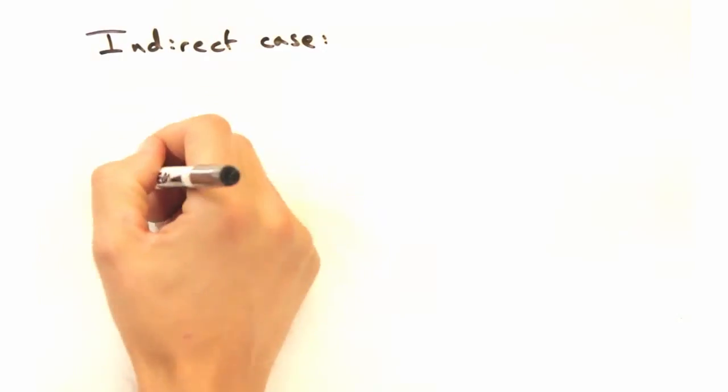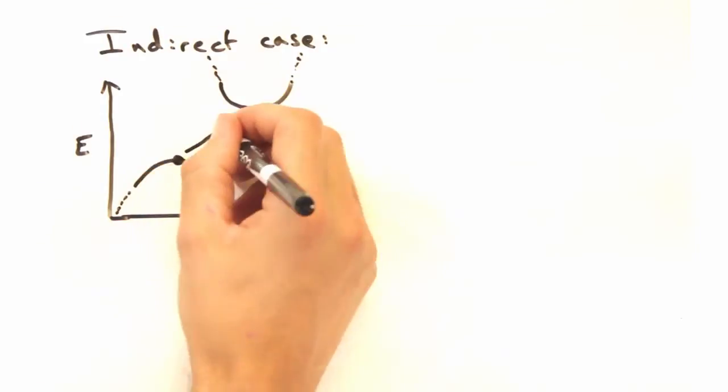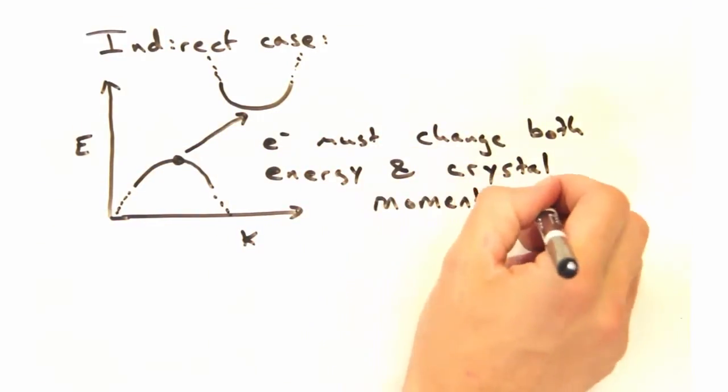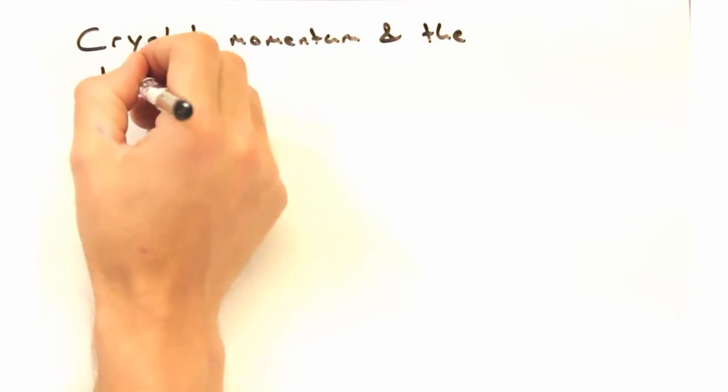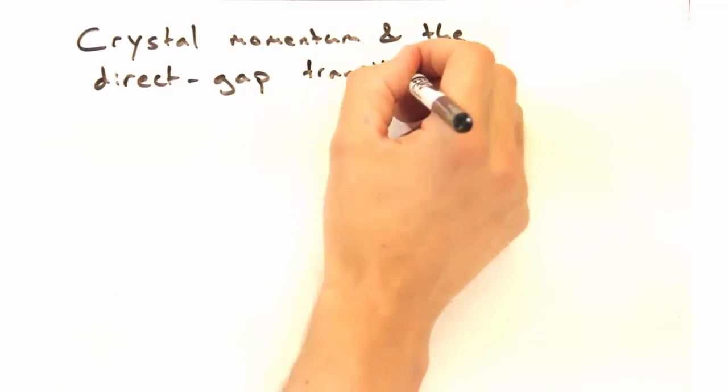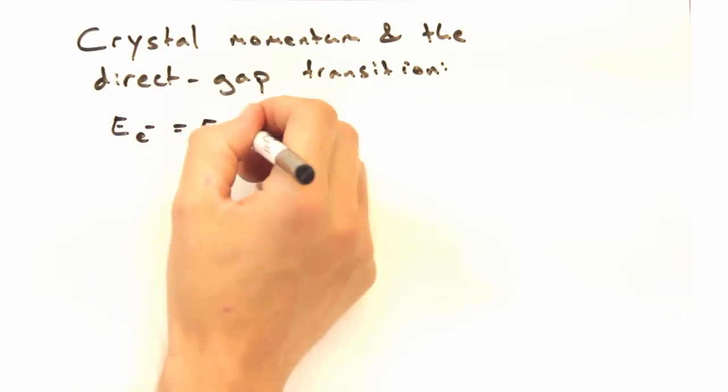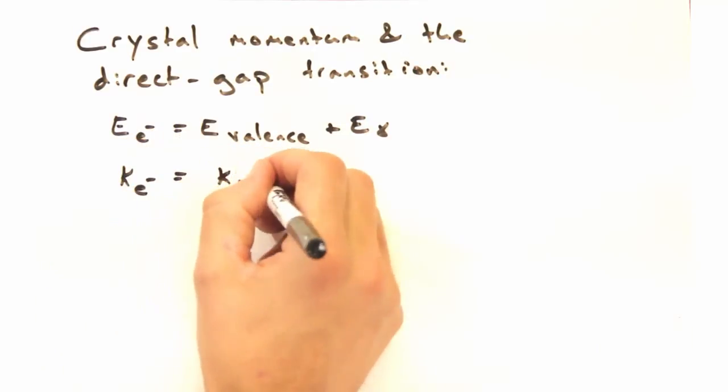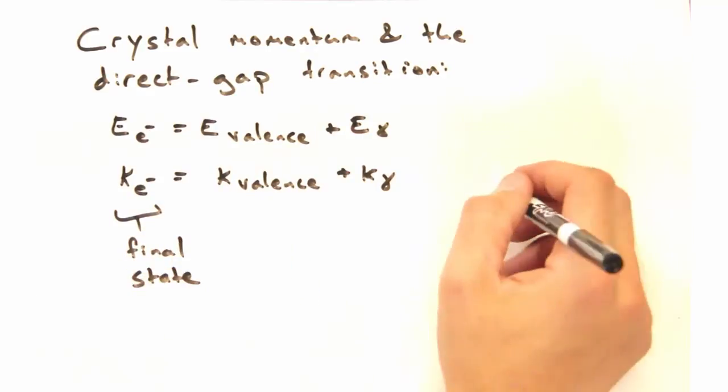Hmm, but what about silicon's indirect band gap? Even if the photon has the right energy to bridge the gap, we still have to change the momentum of the electron. Okay, slow down. Let's build this up by just considering energy and momentum conservation laws. The direct band gap case is pretty simple, so let's start with that one first. The final energy of the electron is just the energy of the valence band plus the energy of the photon. Similarly, the final momentum of the electron in the conduction band is equal to the momentum in the valence band plus the momentum of the photon.